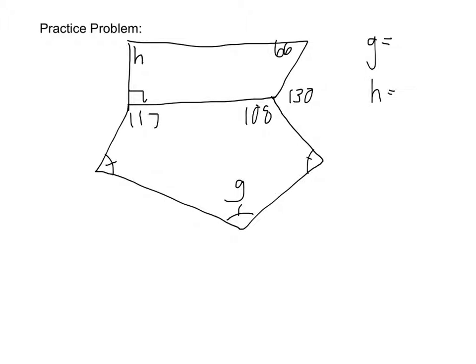we know that in a quadrilateral here, it's going to add up to 360. So the 360 is going to be H plus 66 plus the right angle here, which is going to be 90, and then this angle,